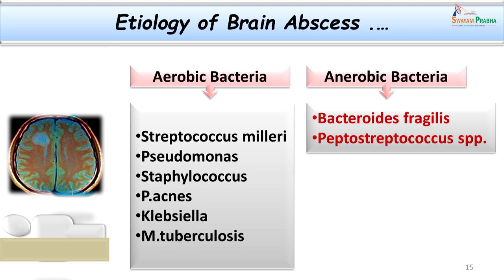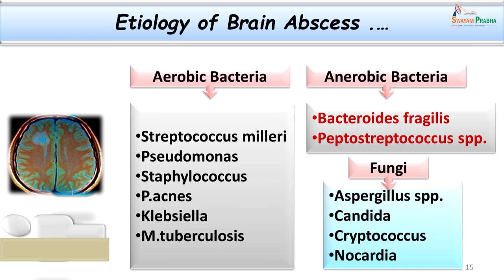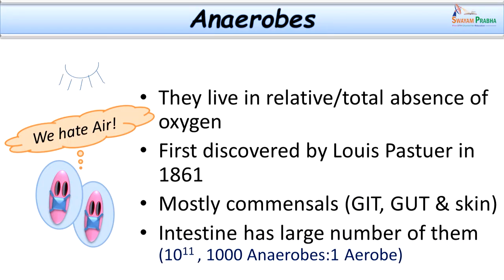There could be an association of Bacteroides fragilis with Peptostreptococcus or Peptococcus, or anaerobic bacteria associated with aerobic bacteria. Some fungi should be kept in mind as differential diagnoses. Fungi involved in brain abscess include Aspergillus species, Candida species, Cryptococcus, and Nocardia species. Fungal brain abscesses are more prevalent in immunocompromised patients, those with malignancies, or those on prolonged antibiotic treatment.